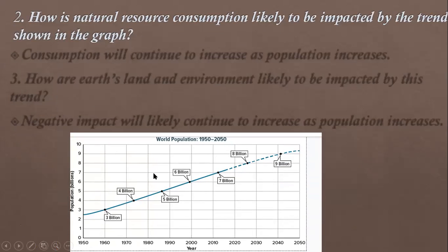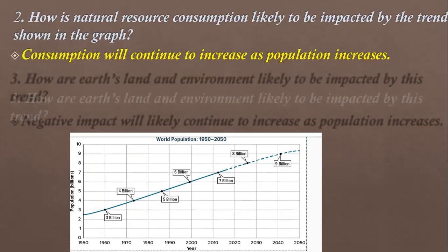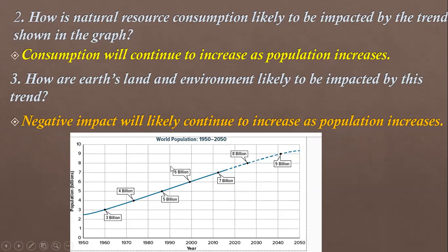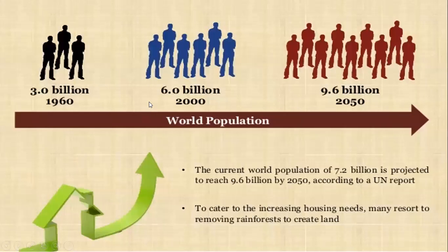The second question related to this graph: how is natural resource consumption likely to be impacted by the trend shown in the graph? The increase of population will increase consumption. So continuous increasing of population will lead to continuous increase of consumption. How are land and environment likely to be impacted by this trend? The land and environment will be affected by an increase in number of population. Negative impact will likely continue to increase as population increases, because they are using something called natural resources.